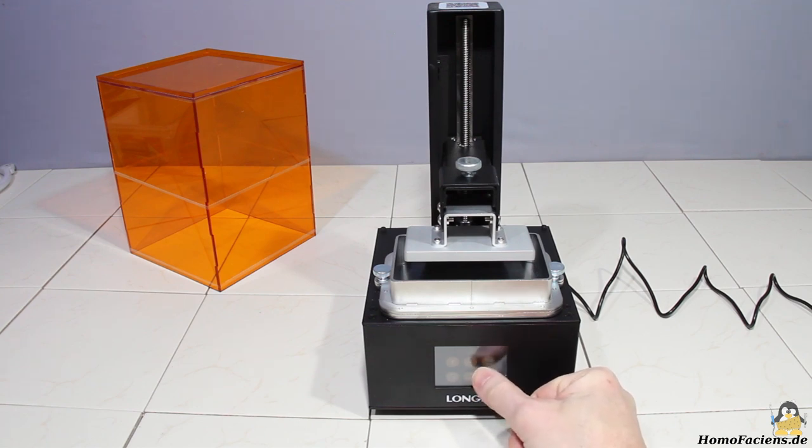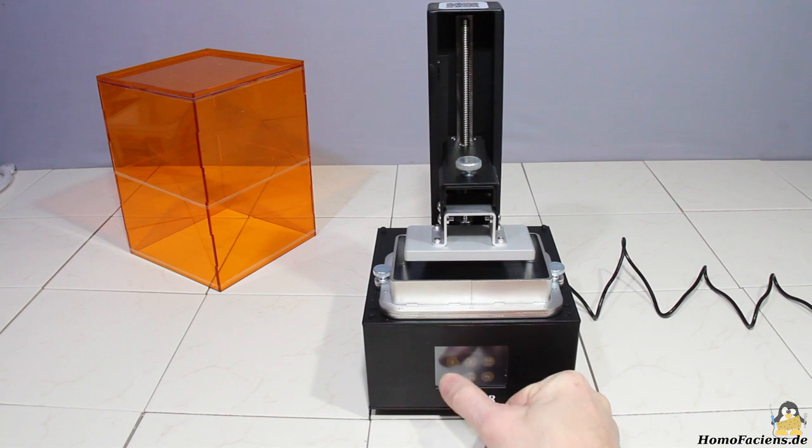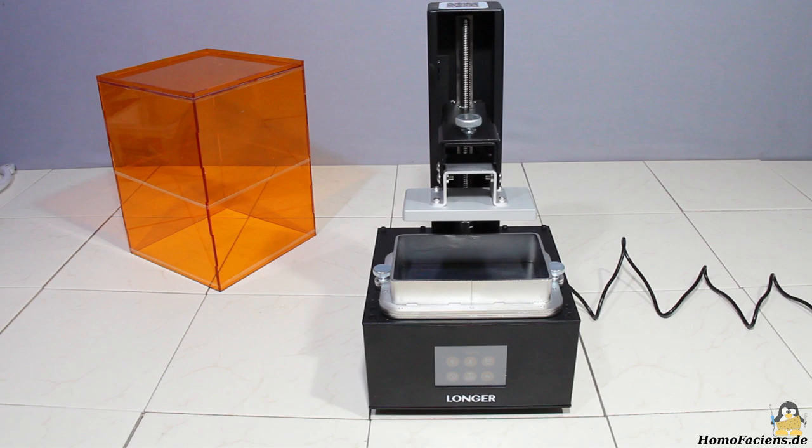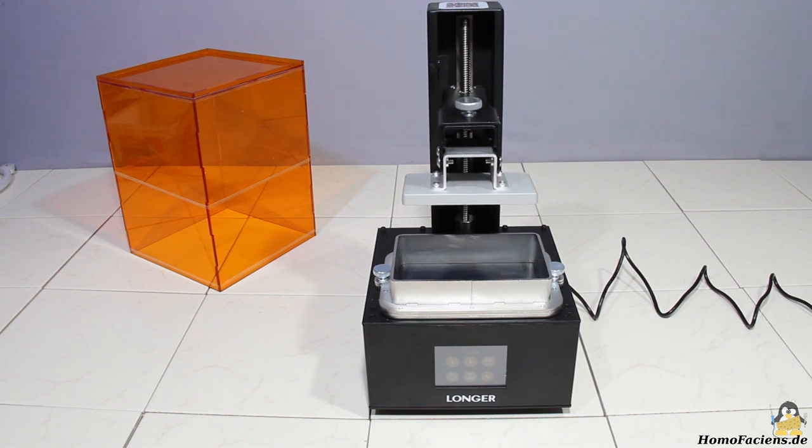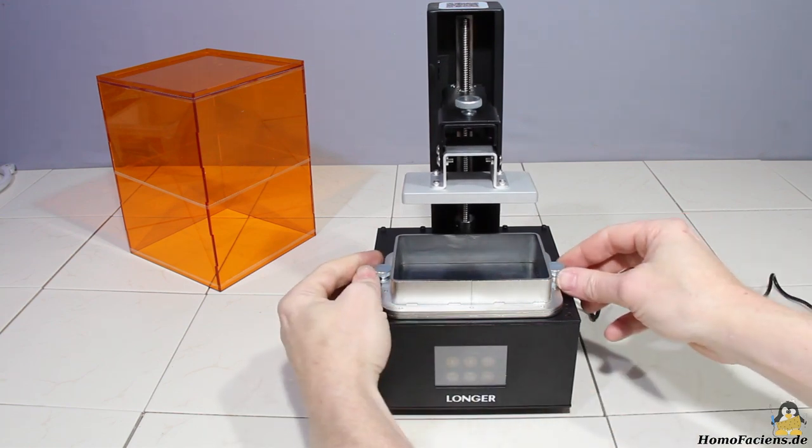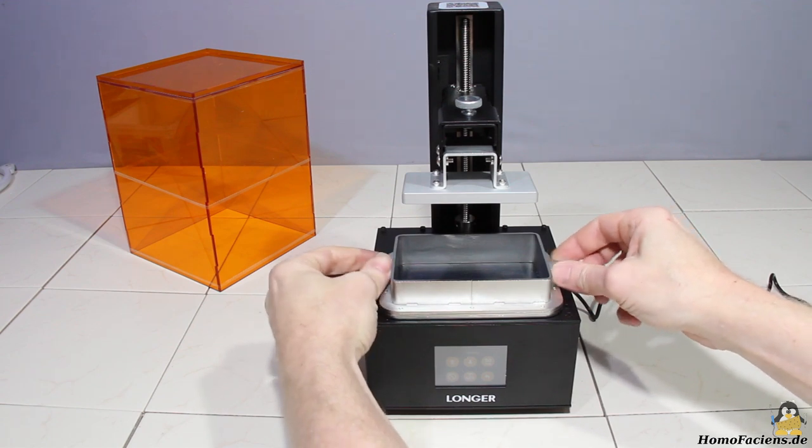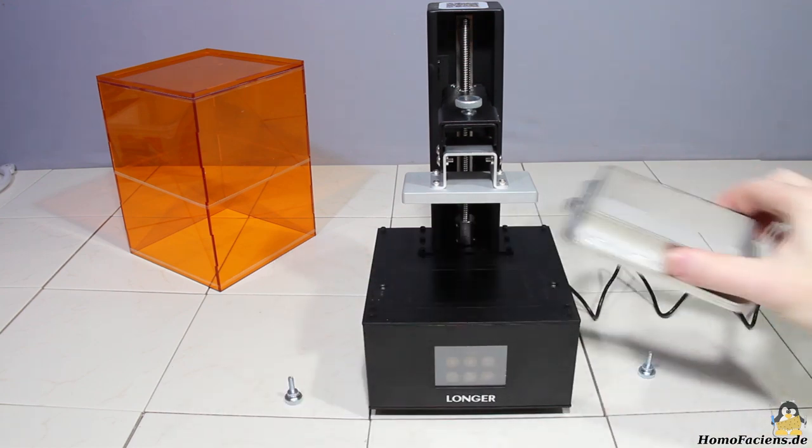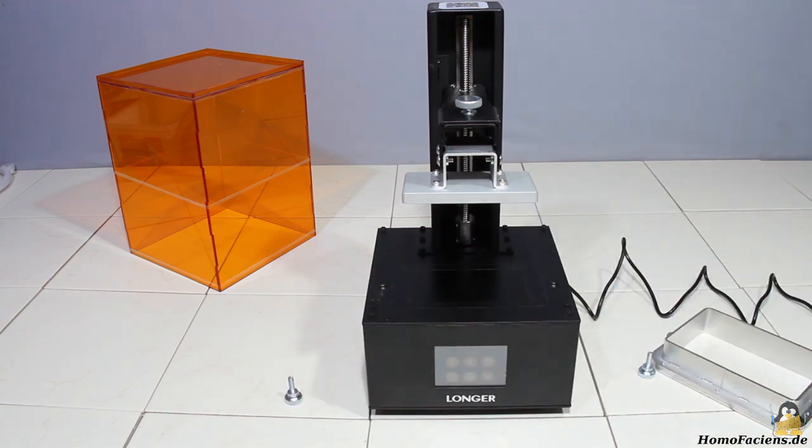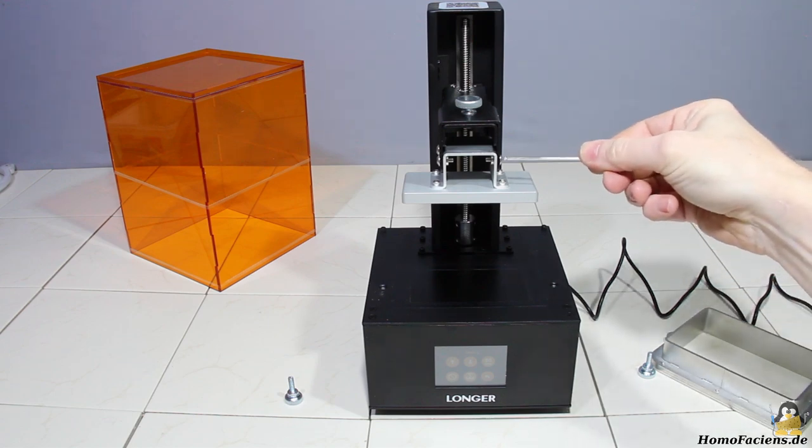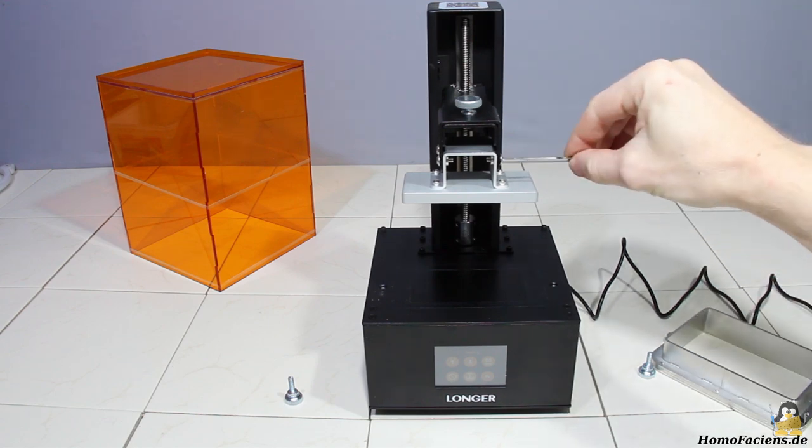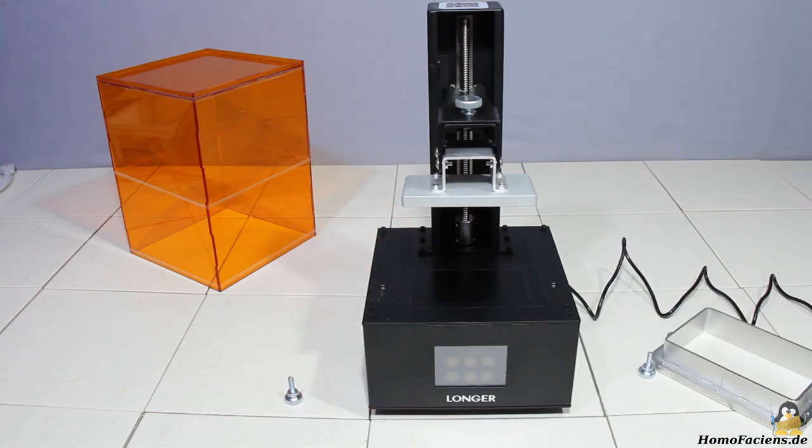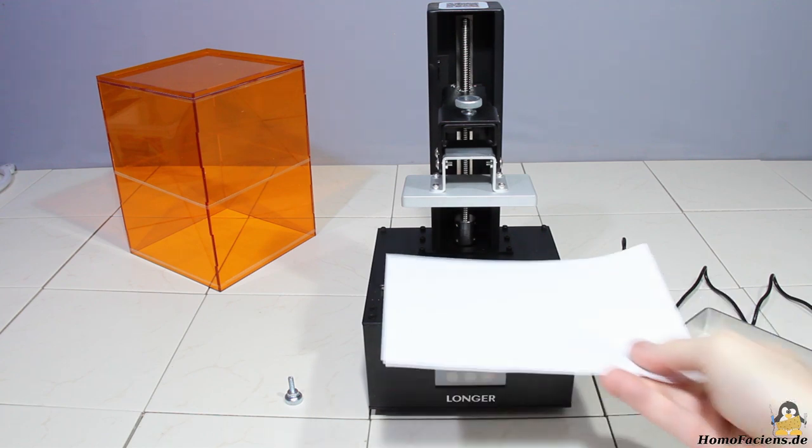To adjust the printer, the build plate is raised via the on-screen menu. The resin tank is unscrewed. The fastening screws of the build plate are loosened. A sheet of paper is placed on the display.